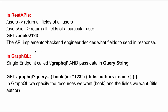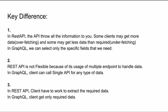In REST API the backend service decides what data is returned — the client has no way to specify which fields it needs. But in GraphQL we have a single endpoint and pass data as queries. For example, if we need only the title and author name of a book, we send a GET request to slash graphql, name the query 'book', pass id 123, and specify exactly the fields we want: title and author name.